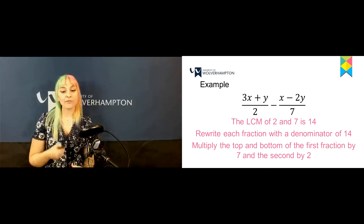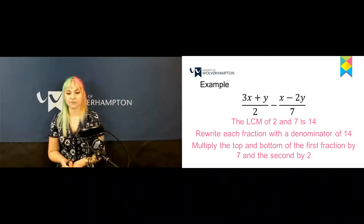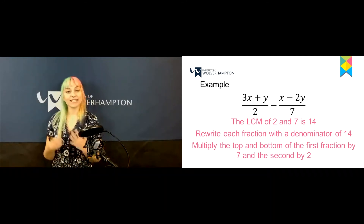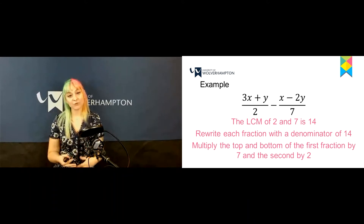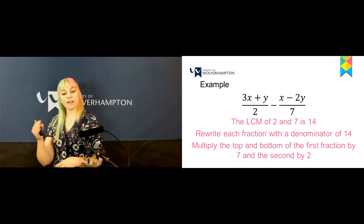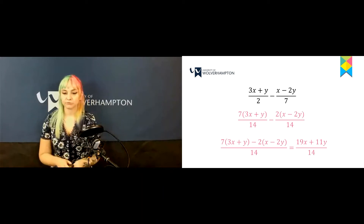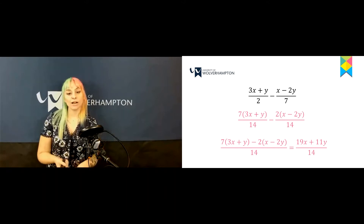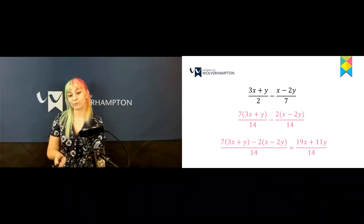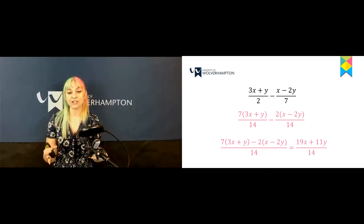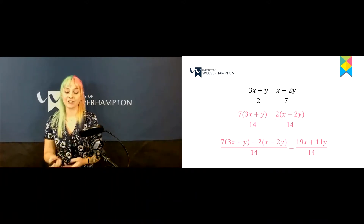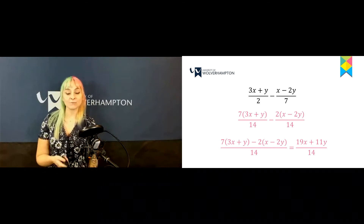Looking at this example, we have (3x+y) over 2 minus (x minus 2y) over 7. Both denominators are different, and the lowest common multiple of 2 and 7 is 14. We rewrite each fraction with a denominator of 14 — multiplying the top and bottom of the first fraction by 7, and the top and bottom of the second fraction by 2. This gives us 7(3x+y) over 14 minus 2(x minus 2y) over 14, and the final answer is 19x + 11y over 14.